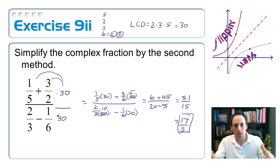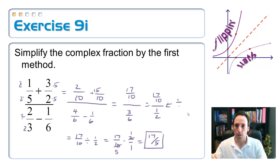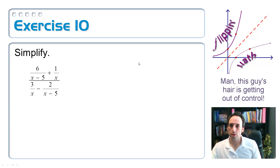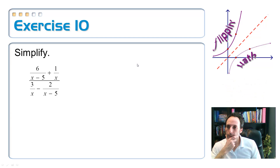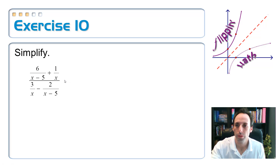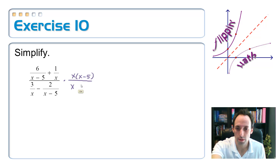Sometimes one method works better than the other depending on the problem. Now we need to look at this with some algebraic expressions. Look at that complex fraction. We'll do this by multiplying — the least common denominator is very simple here. Multiply the top and the bottom by the least common denominator overall, which is going to be x times (x minus 5). Rowan's awake, so I'm going to take a little break and come back.